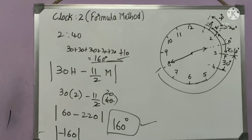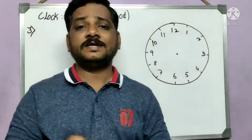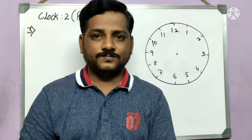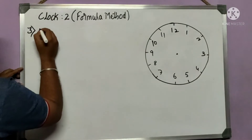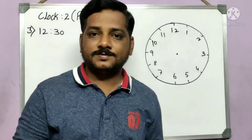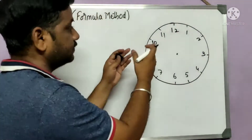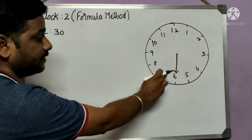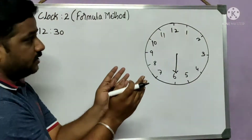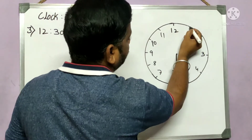You can use whichever method feels better. Now let's look at a third, very critical example. This question involves a tricky situation, so watch carefully. Let's take the time 12:30. If it is 12 hours and 30 minutes, what is the angle between the two hands?